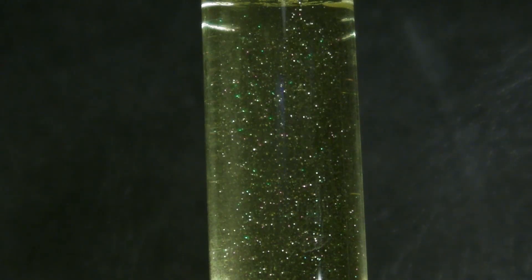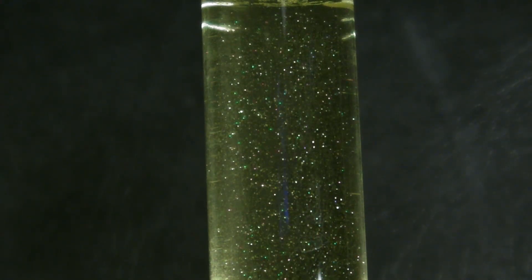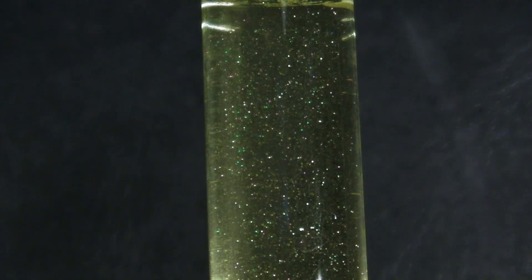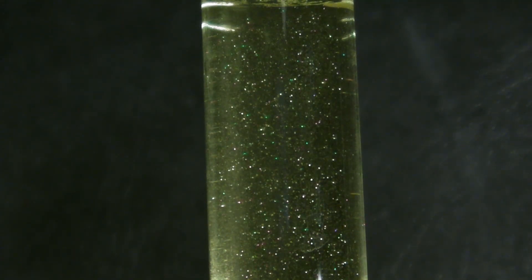When the solution cools down, the lead iodide precipitates out again and forms shiny flat crystals. This demonstration is also called golden rain.